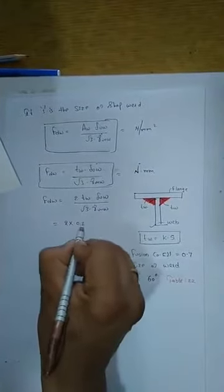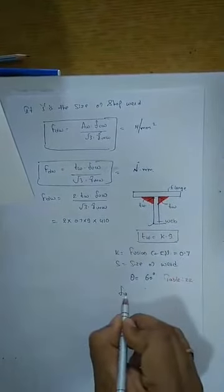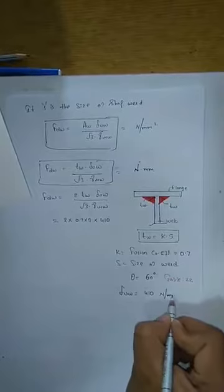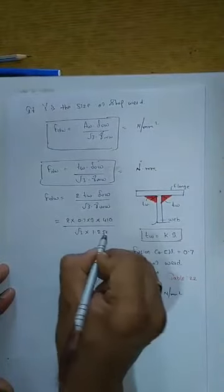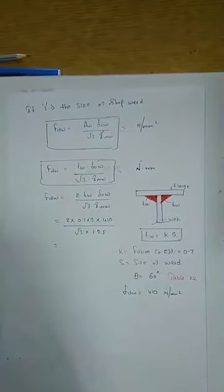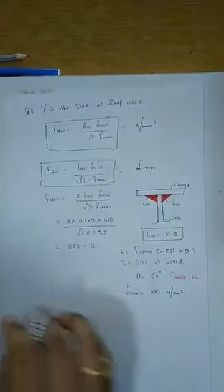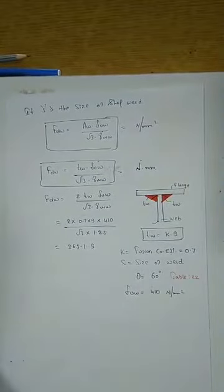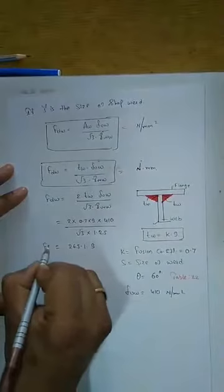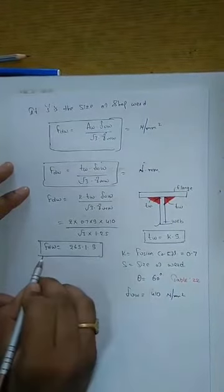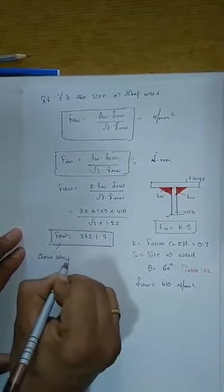So the shear strength of the fillet weld is 265.1 S N/mm, where S is the size of the weld. Now equate this shear strength to the required shear force per mm length to find the size S of the weld.